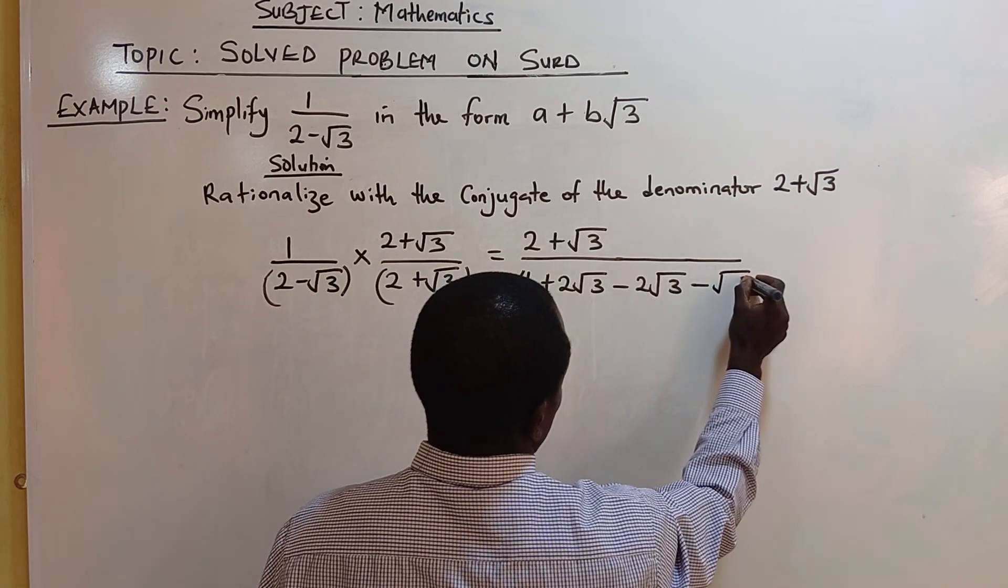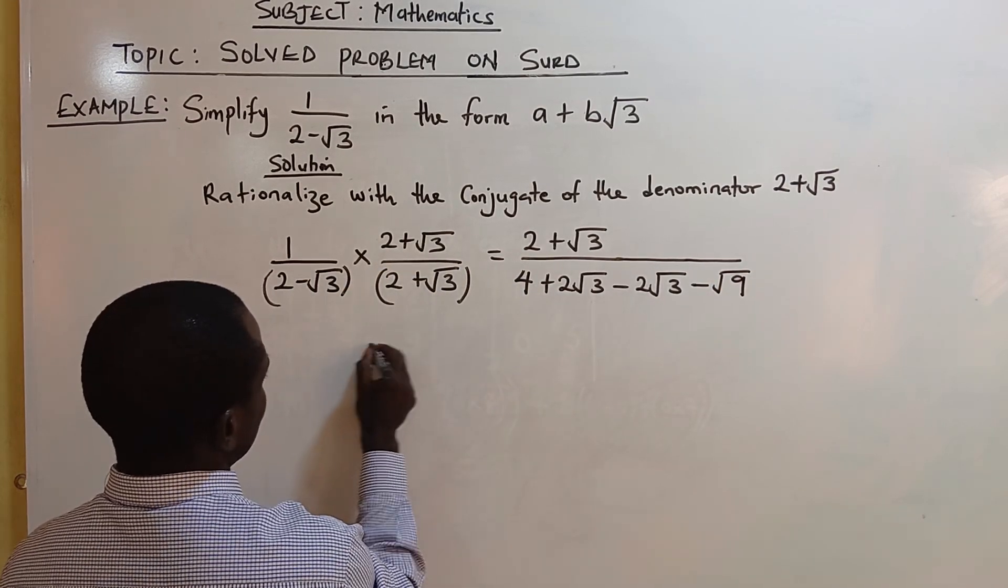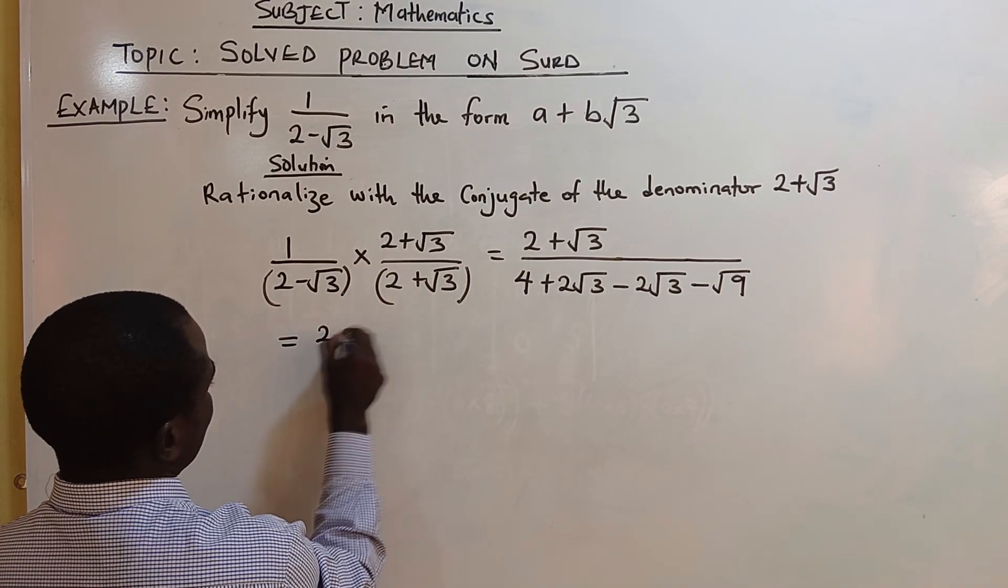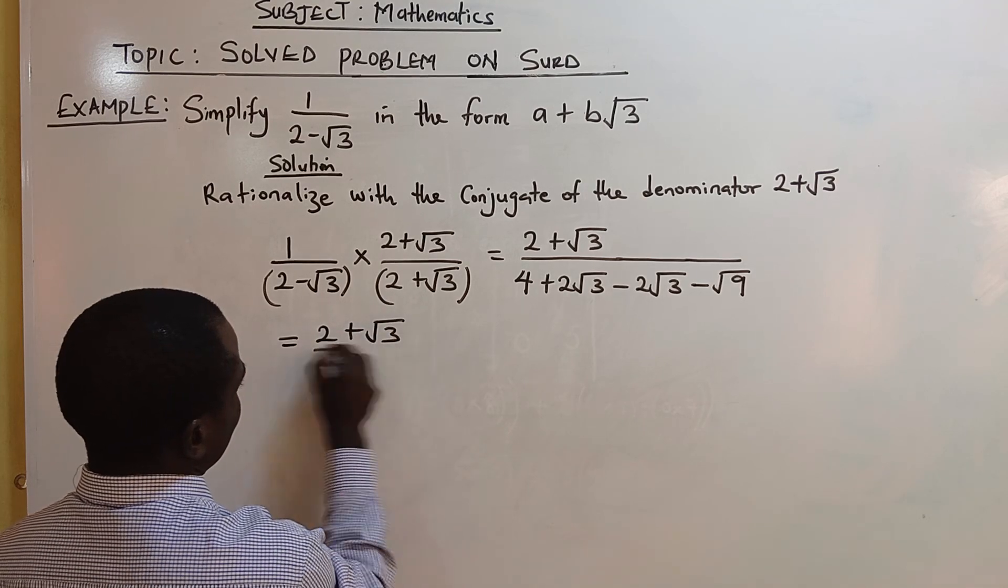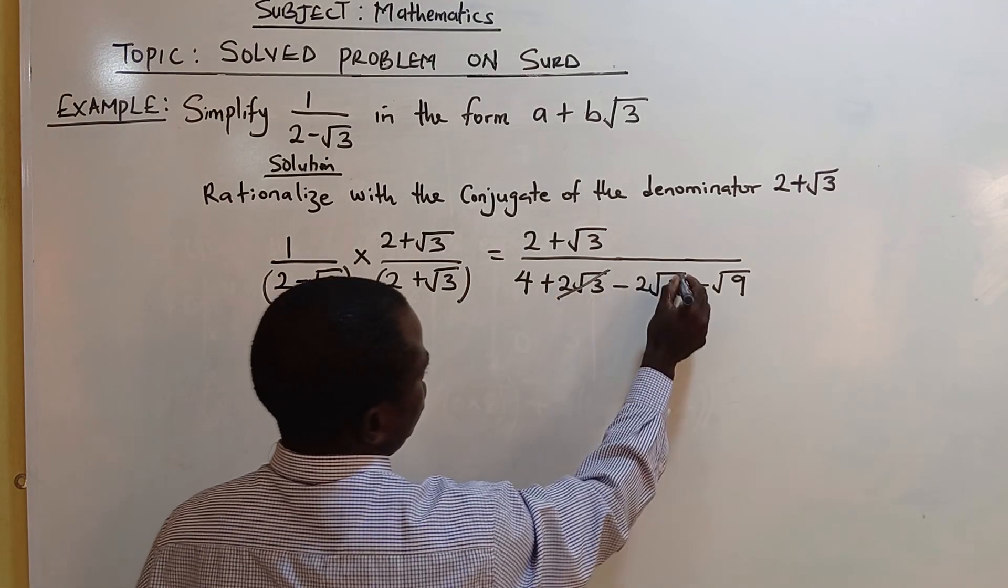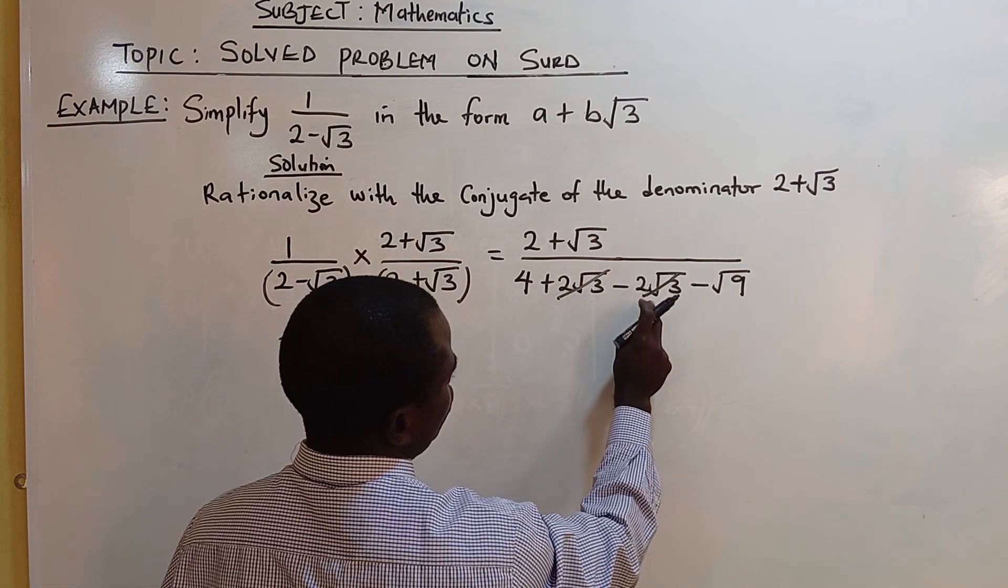Equals 2 plus root 3 over... this cancels: plus root 3 minus root 3.